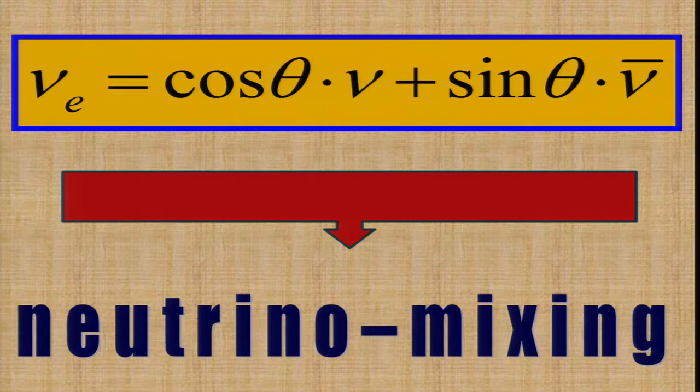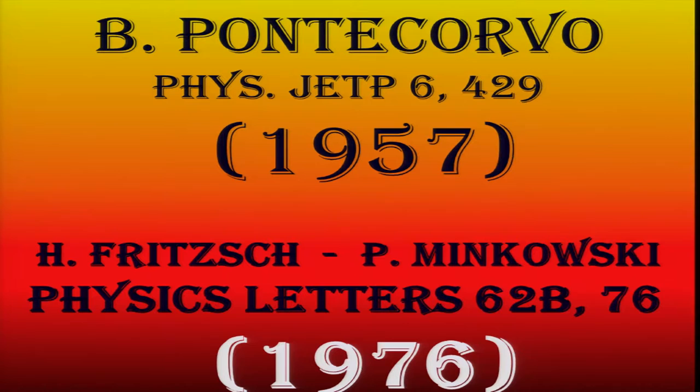Now, if neutrinos have masses, it could well be that the same effect happens as we see now for the quarks, that there are some funny transitions going on. For example, if the electron neutrino, as Pontecorvo already pointed out in 1957, is a superposition of two states with a cosine and a sine of an angle. Of course, Pontecorvo knew there was only one neutrino. So he took this neutrino and the antineutrino, which doesn't make much sense anymore. But that was his assumption. Anyway, then you get some mixing of neutrinos. That was published in 1957 by Bruno Pontecorvo.